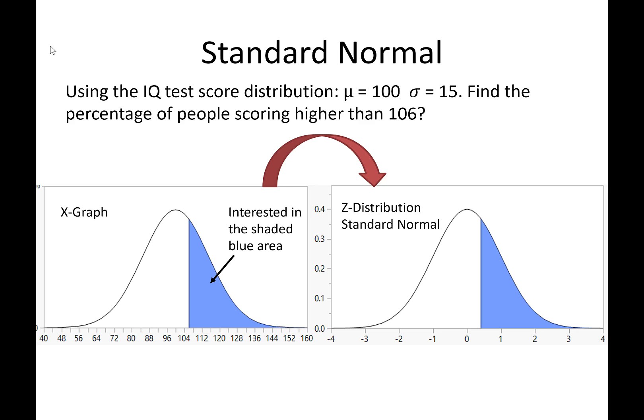Previously we saw an example using IQ test scores. And we saw the mean score for the IQ test is 100 with a standard deviation of 15. What we would want to do for instance is maybe find the percent of people scoring higher than a 106. And we can see that 106 is probably not a full amount of standard deviations away from 100.